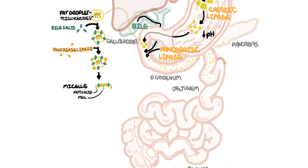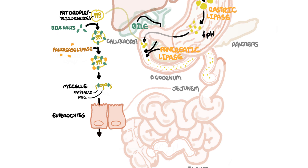In this form, the monoglycerides and fatty acids are able to be transported and absorbed across the apical membrane of enterocytes, mainly in the proximal two-thirds of the jejunum, which is essentially the middle part of the small intestine.